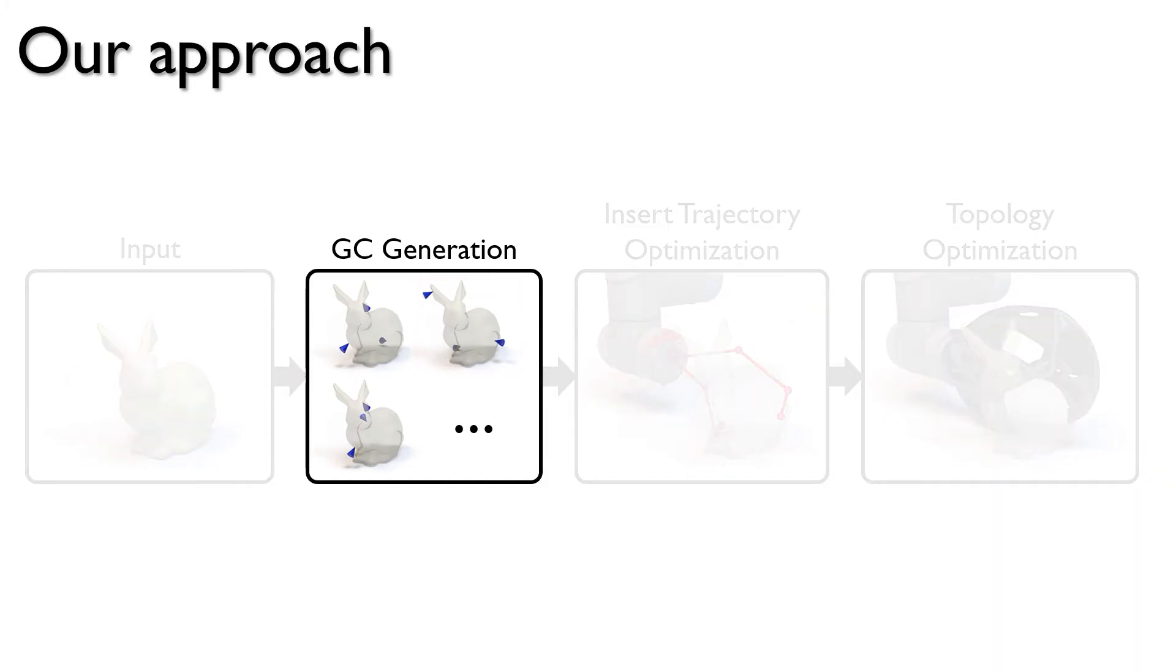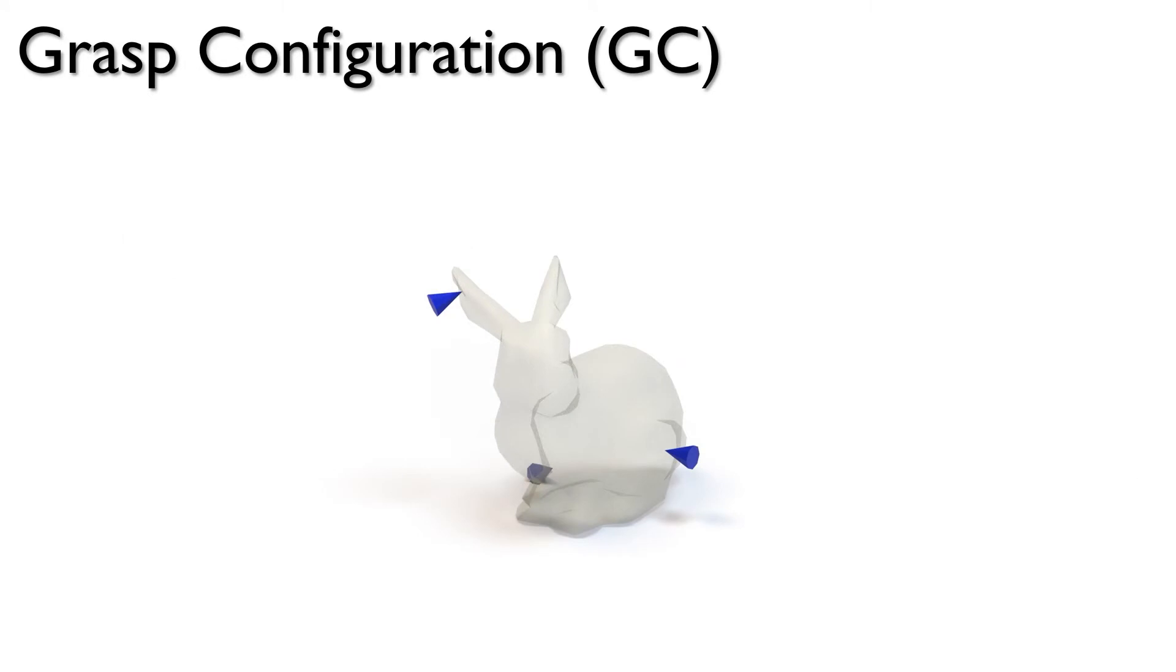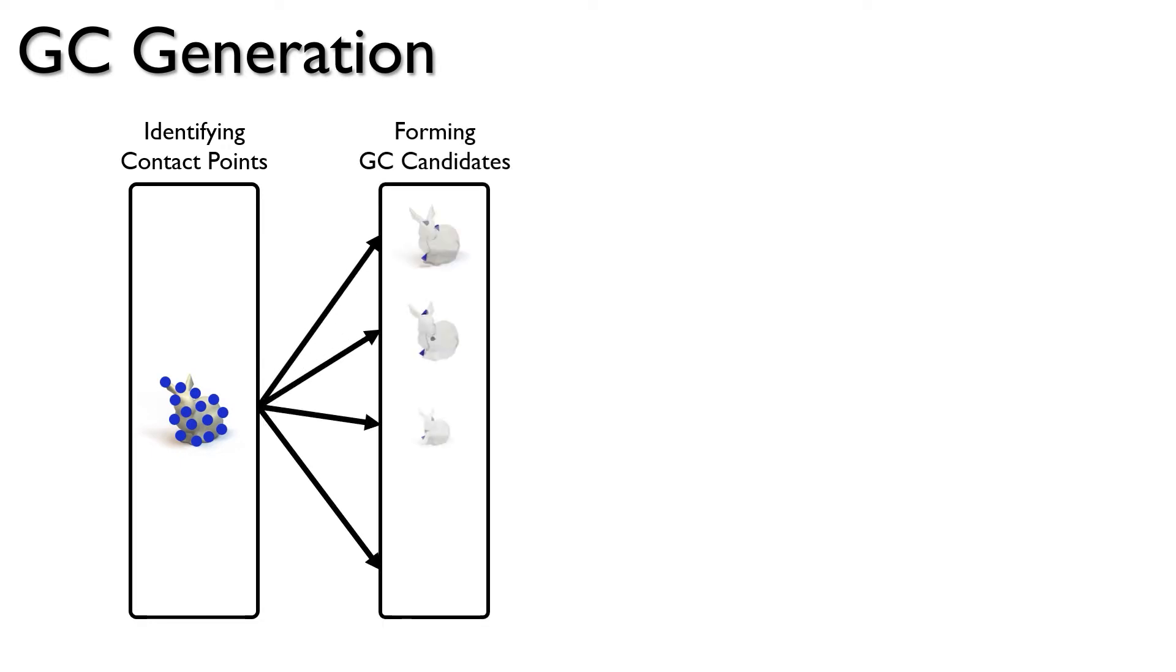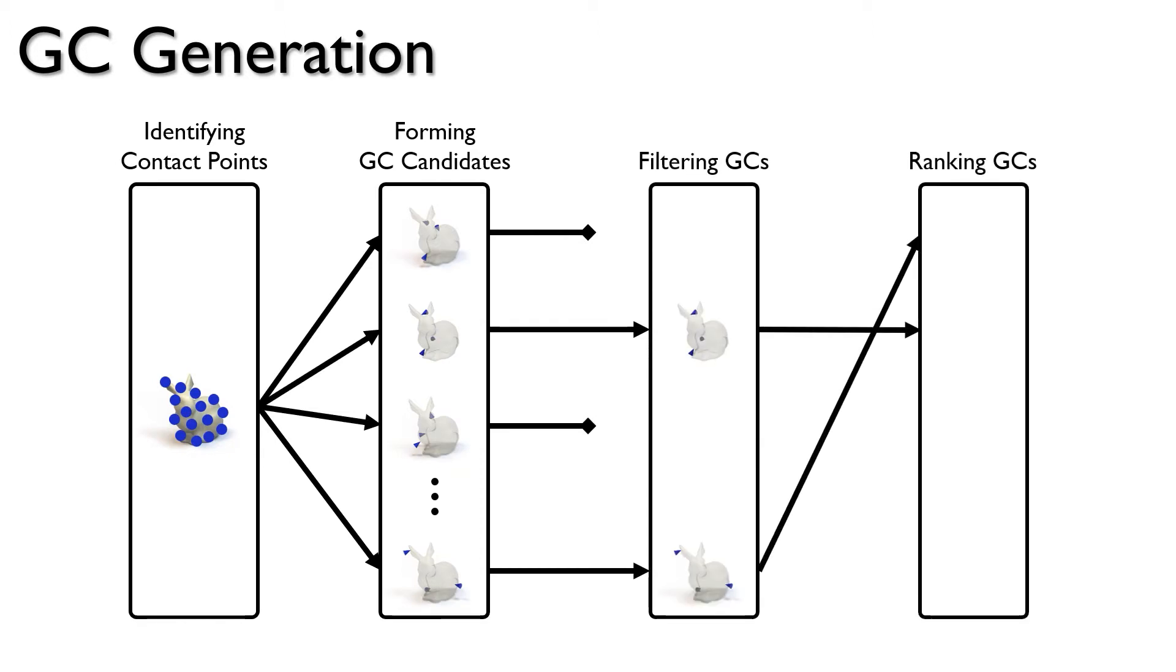We first focus on the grasp configuration generation stage. Our gripper will contact the object at 3 locations, and so a grasp configuration will contain exactly 3 contact points. We choose 3 because it is the minimum number of contact points that constrains a rigid body. The GC generation step starts by identifying potential contact points. Next, multiple GC candidates are formed by randomly selecting 3 contact points. We then filter out undesirable GCs and rank them based on some metrics.